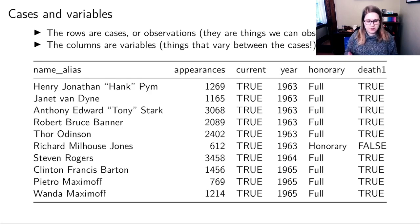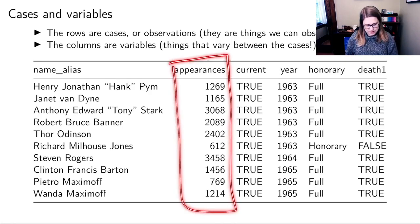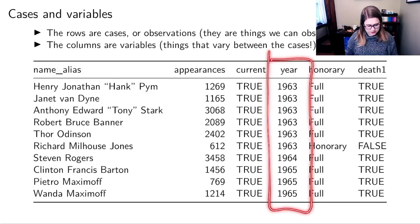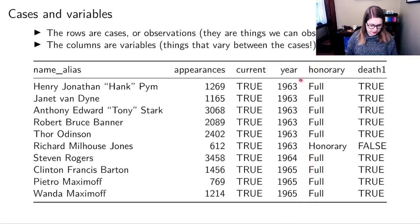And the columns are variables. Variables are things that vary between the cases. So the number of appearances varies. Some of these Avengers have appeared many times, some have appeared not that many times. We've got this variable current, which I think means are they a current member of the universe, which could be true or false. We've got a variable year, which is the year that they were first introduced. Looks like I've sorted the data by year. We've got whether or not they're an honorary member of the Avengers, and whether they've died.